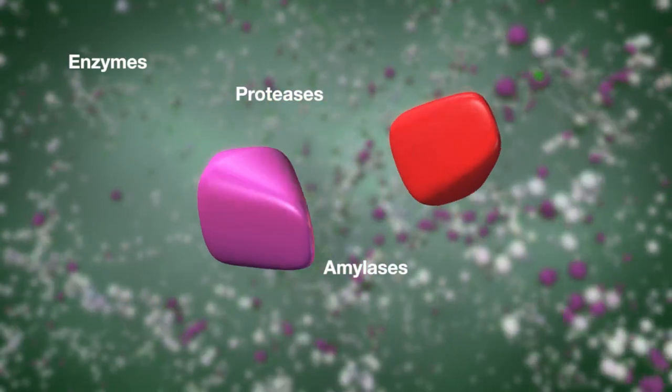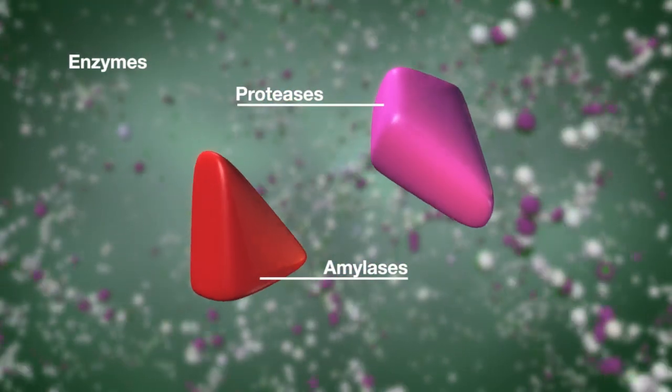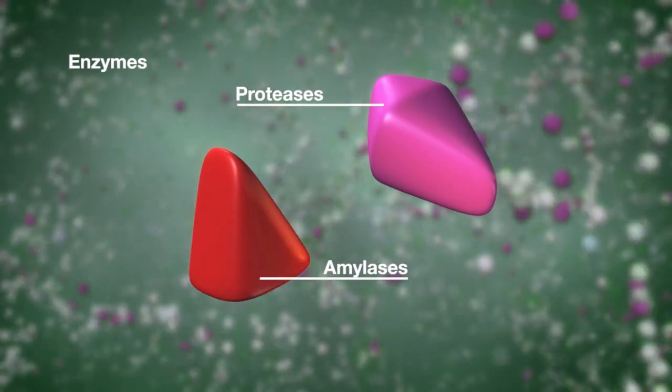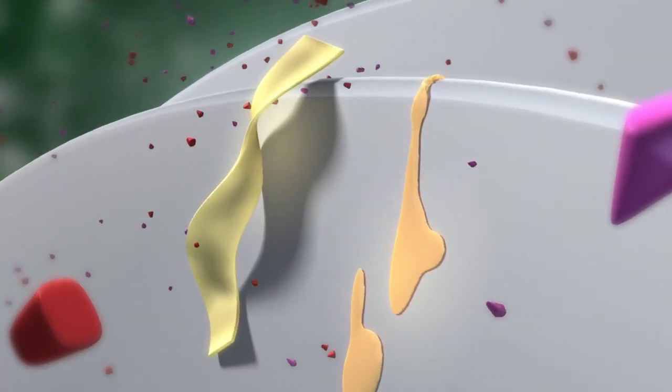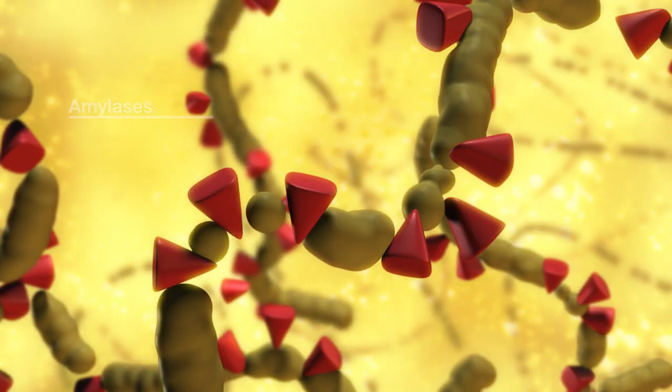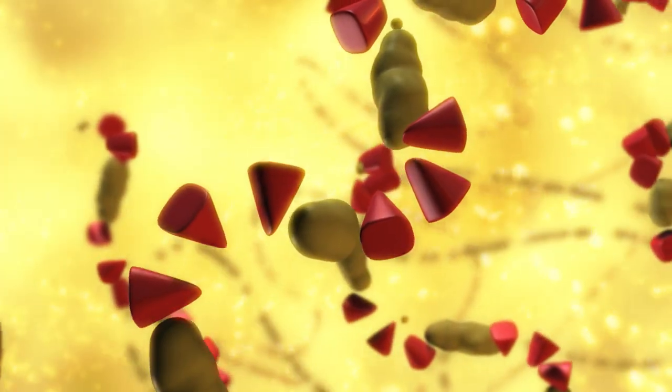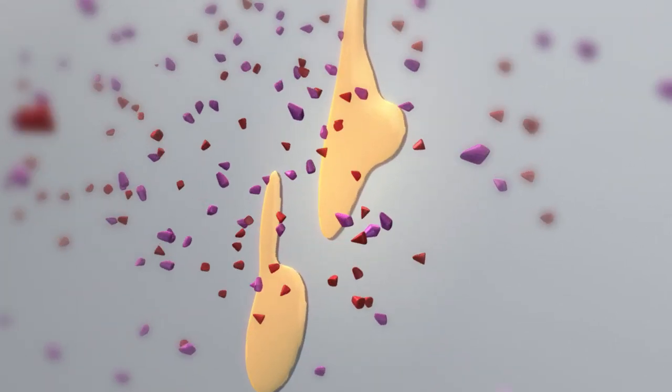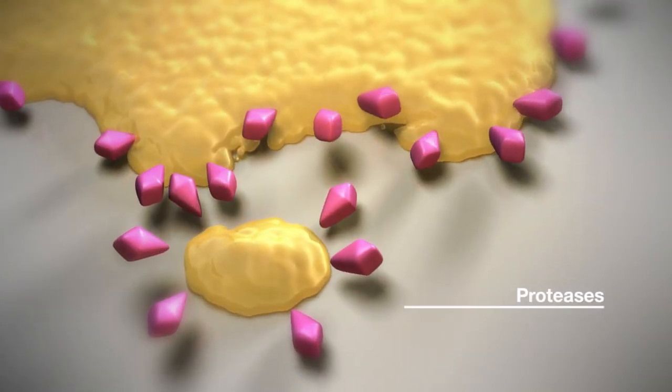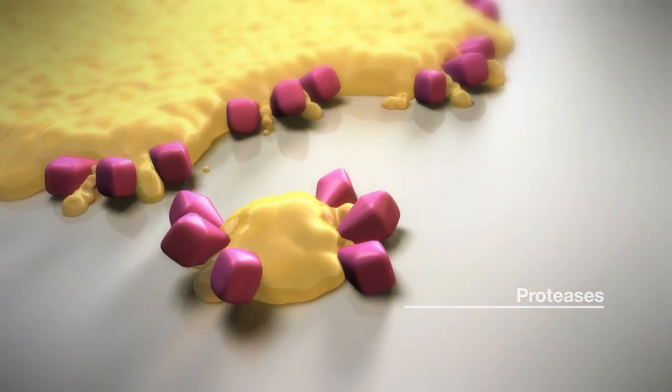Amylases and proteases are natural digestive enzymes. Amylases cleave the chain molecule starch into its components and thereby remove carbohydrate-containing food residues from dishes. Proteases do the same thing with proteins and deal effectively with sticky egg yolk and meat residues.